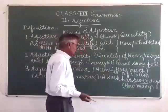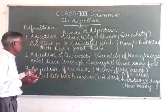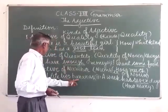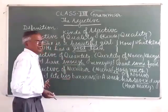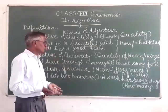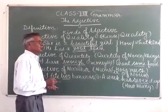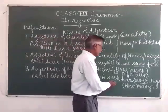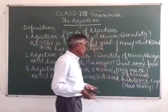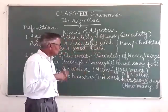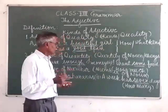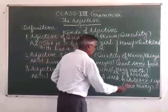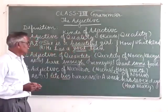To find the adjective of number, we form a question using 'how many.' For example: 'How many bananas did I eat?' — the answer is two, so two is the adjective of number. Similarly, 'How many days has a week?' — the answer is seven, so seven is also an adjective of number.